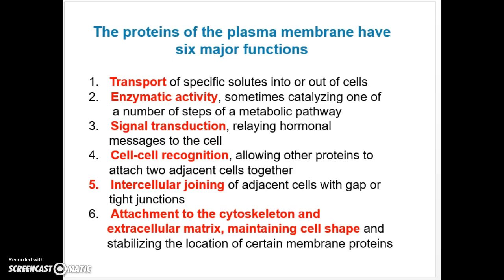A fourth function is cell-to-cell recognition, allowing other proteins to attach two adjacent cells together. So a form of junction can occur with the help of these plasma membrane proteins. This is another way to look at this: intercellular joining of adjacent cells with either gap or tight junctions. Please look those up and know the difference between the two. And attachment to the cytoskeleton and extracellular matrix, which helps to maintain the shape of the cell.